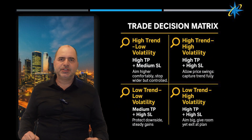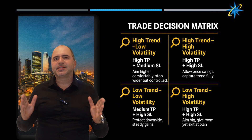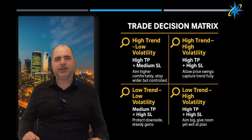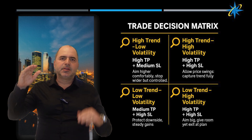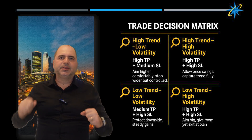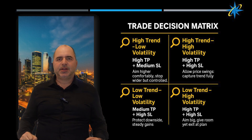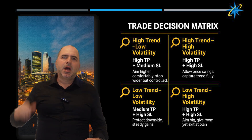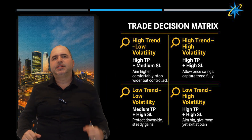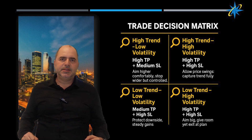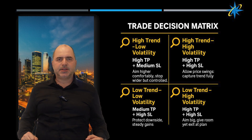We have translated our simulations into a practical decision matrix. High trend, low volatility comes with high TP and medium SL. High trend, high volatility comes with high TP and high SL.